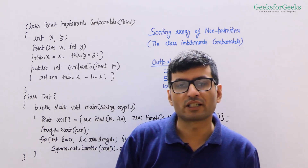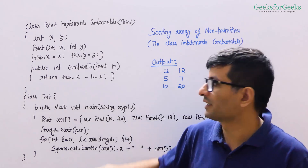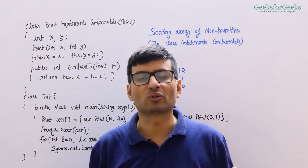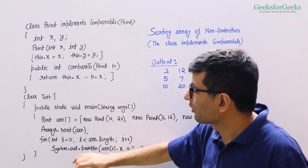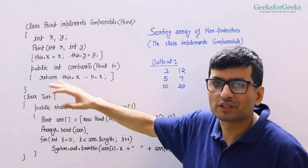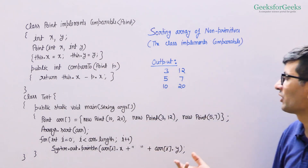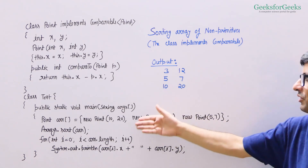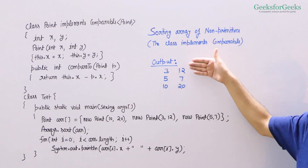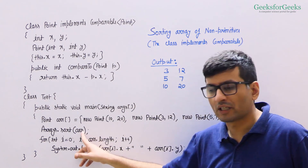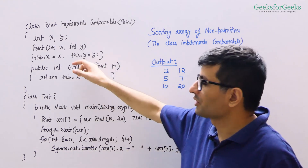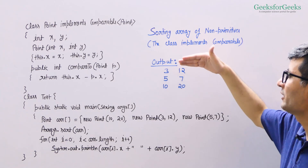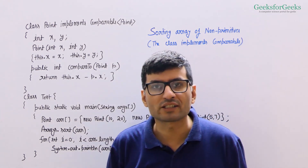When a class implements Comparable, it tells you how to compare its objects. When we call Arrays.sort, it uses compareTo to sort the array in increasing order of x values. With input objects (10,20), (3,12), and (5,7), the output is (3,12), (5,7), (10,20). If you pass Collections.reverseOrder after the array, it reverses the natural order, giving (10,20), (5,7), (3,12). The other approach is writing a separate class that implements the Comparator interface.